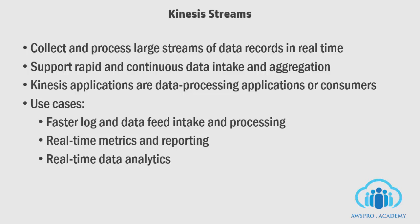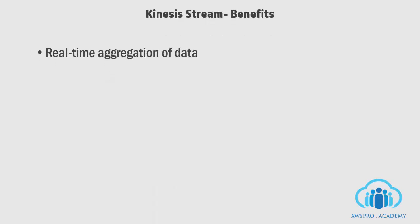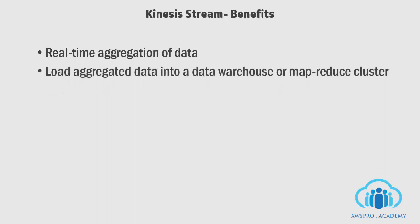The last use case is Complex Stream Processing. You can move data from multiple Amazon Kinesis stream applications into another stream for downstream processing by a different streams application. You can create DAGs (directed acyclic graphs) of data streams using Kinesis applications. A common use is real-time aggregation of data and loading and aggregating the data into a data warehouse or MapReduce cluster.